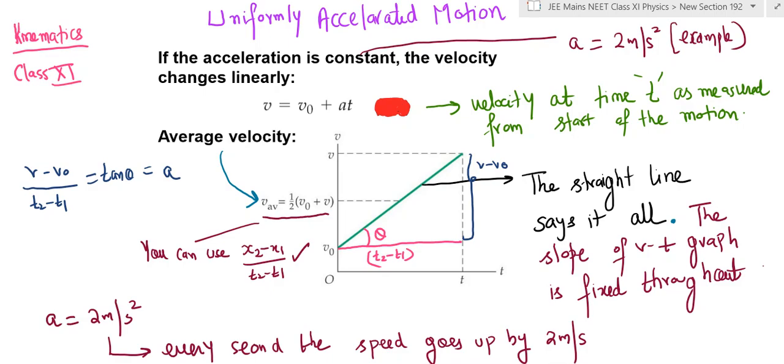No change in the slope - slope is nothing but acceleration, and therefore it is called uniformly accelerated motion, because the slope does not change throughout the motion for our VT graph.